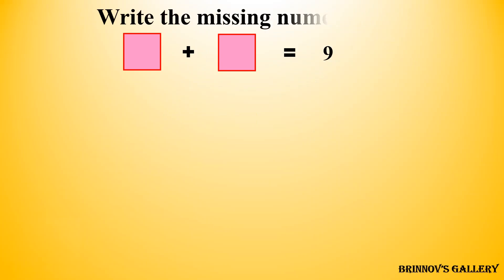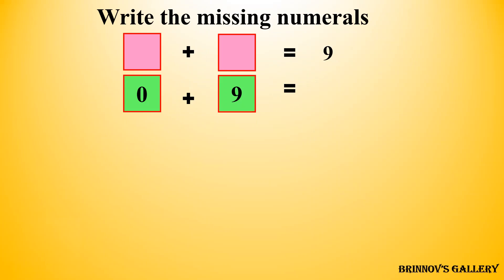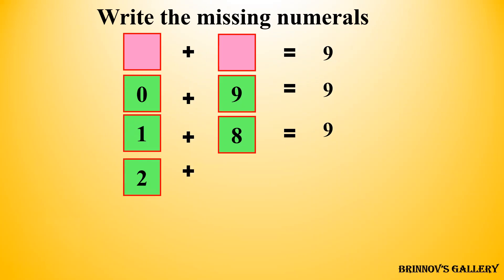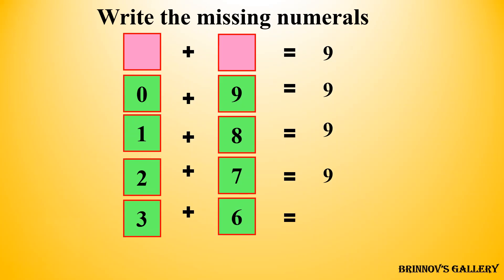Write the missing numerals. 0 plus 9 is equal to 9, or we can also fill 1 plus 8 is equal to 9, or 2 plus 7 is equal to 9, or 3 plus 6 is equal to 9, or 4 plus 5 is equal to 9. We can choose any option from these possibilities to fill the missing numerals.